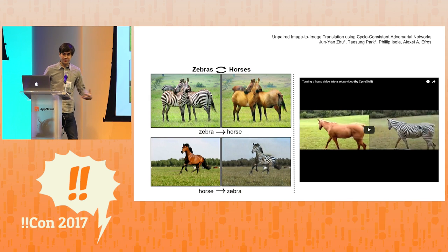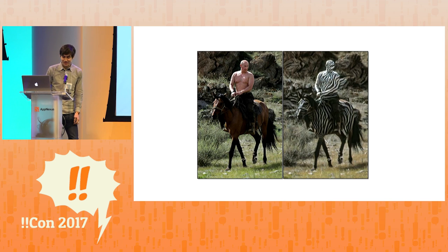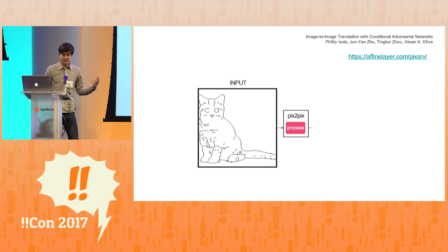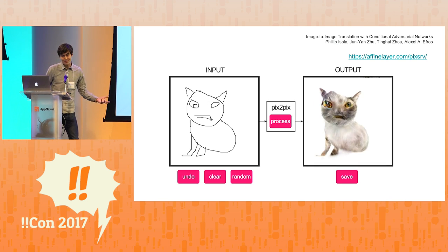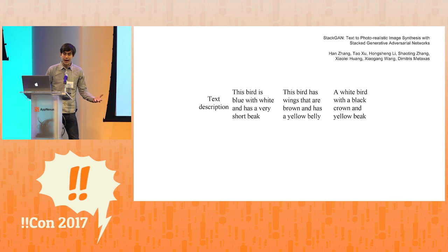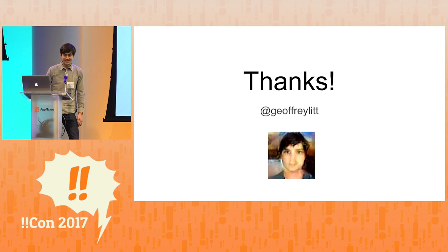People have done all sorts of crazy stuff with this technique — it's blowing up in ML these days. You can dump a bunch of photos of zebras and horses into a GAN and it'll learn how to convert between them, though it doesn't always work either. What if the input was a sketch instead of another photo? You can generate a realistic photo of a cat — you may have seen this demo floating around online, it uses GANs. I tried drawing a cat myself and it actually worked pretty well. And one other crazy example: what if you take captioned images and try to convert just from text describing a bird to a photo of that bird? People have gotten that to work. This is just scratching the surface of what people are doing with GANs these days. I would encourage you to go on Google and check out some of the other stuff that's happening. That's it, thanks.